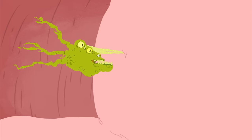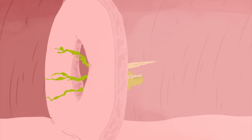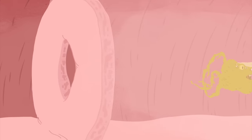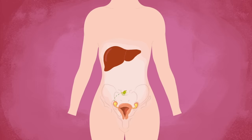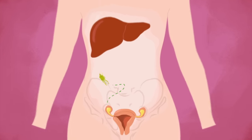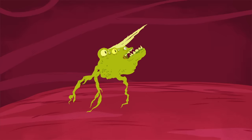In transcoelomic spread, malignant cells penetrate the covering surfaces of cavities in our body. These surfaces are known as peritoneum and serve as walls to segment the body cavity. Malignant cells in ovarian cancer, for example, spread through the peritoneum, which connects the ovary to the liver, resulting in metastasis on the liver surface.